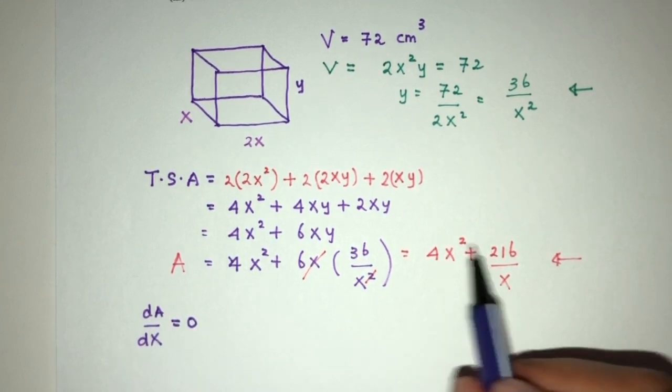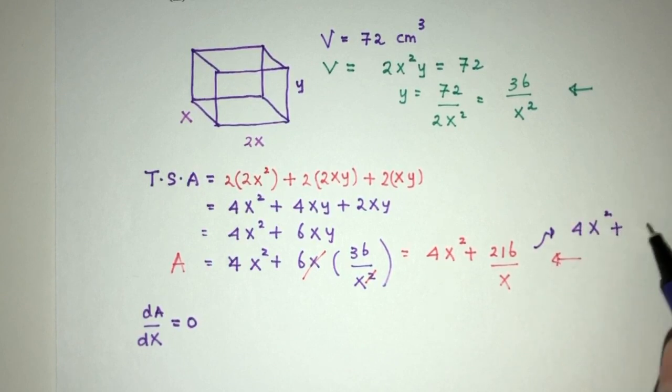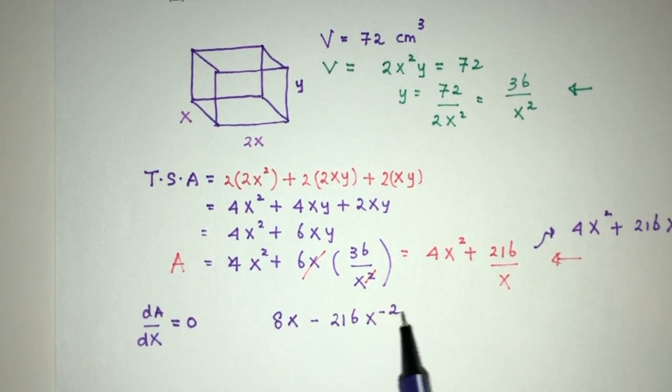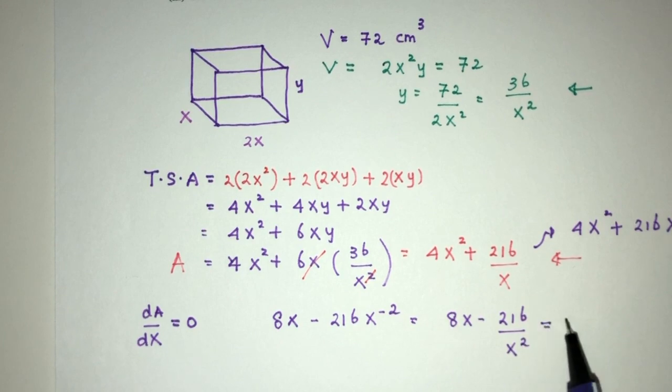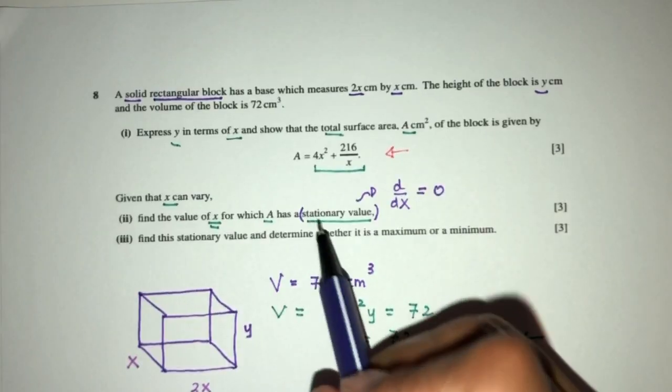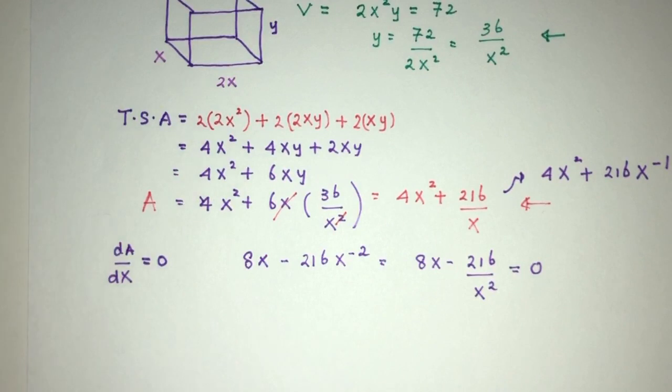So let's first find this. That will be, using this obviously, let's rewrite this as 4x squared plus 216. Let's bring this up, that will be x power minus 1. So dA by dx of this will become 8x minus 216 x power minus 2. Now this is also equal to 8x minus 216 over x squared. Then equate that to 0 because this is what happens at the stationary point. Now at the stationary point, dA by dx is equal to 0, so we equate it to 0.